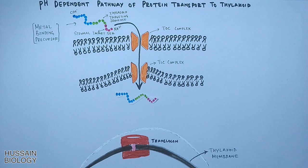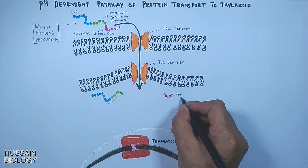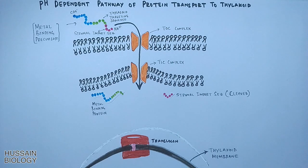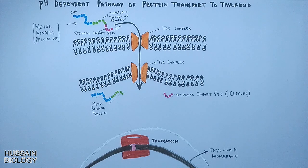Here, the N-terminal stromal sequence is cleaved off, as shown in the animation. Now the thylakoid targeting sequence is exposed, and this thylakoid targeting sequence has two arginine residues attached at the end, shown as RR.